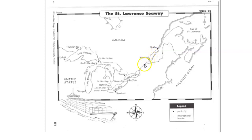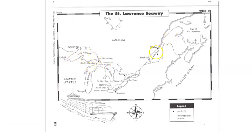The St. Lawrence River and the Seaway connects these five Great Lakes right here. So the Seaway is a connection of a system of canals and locks all through the Great Lakes between the two countries of Canada and the United States.